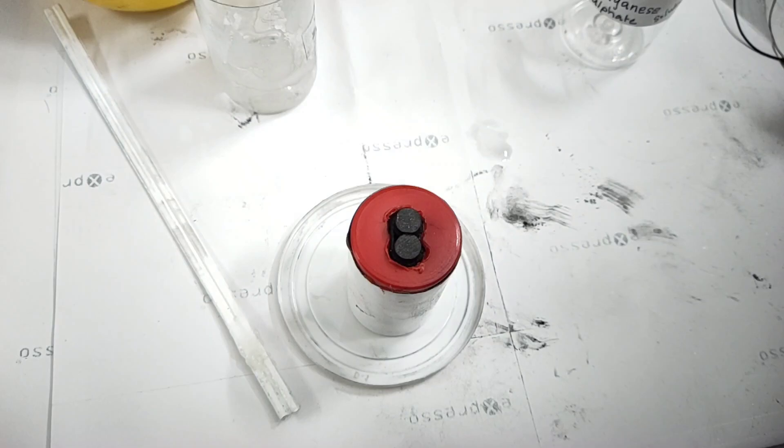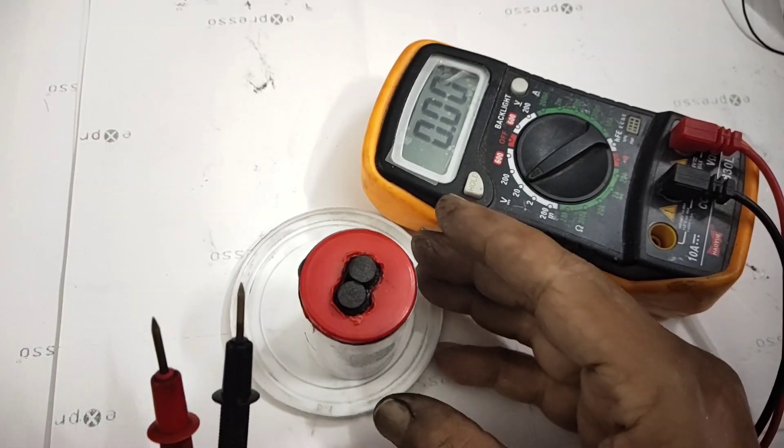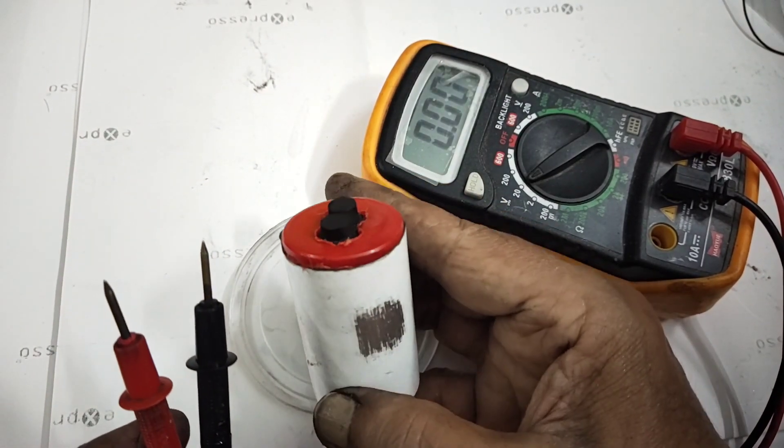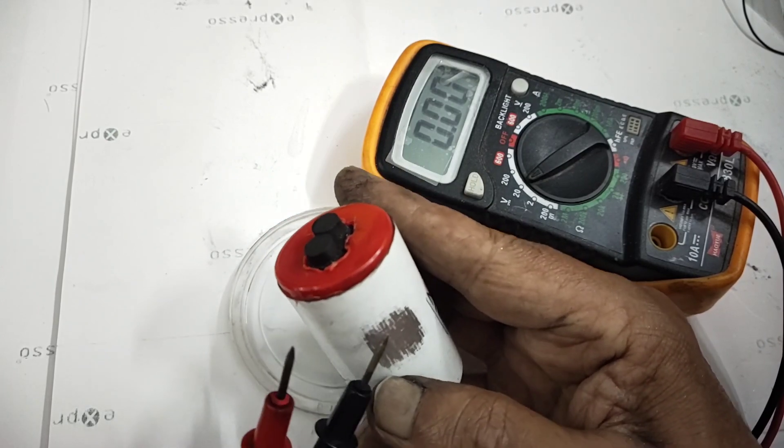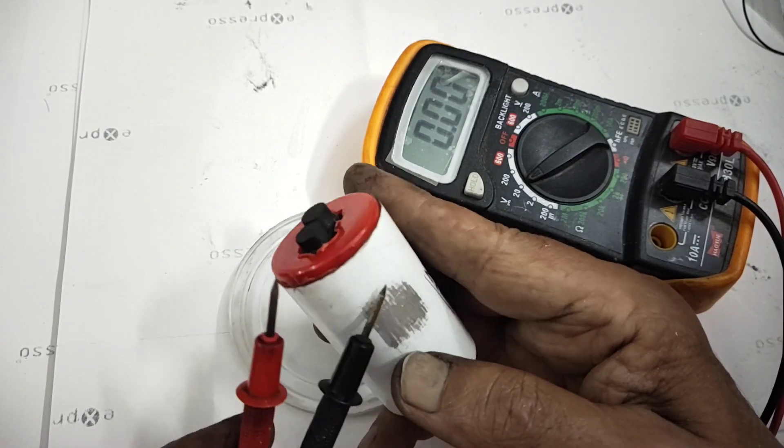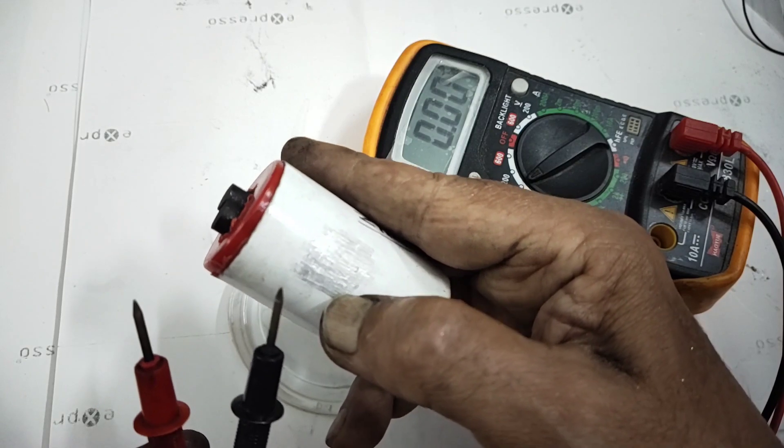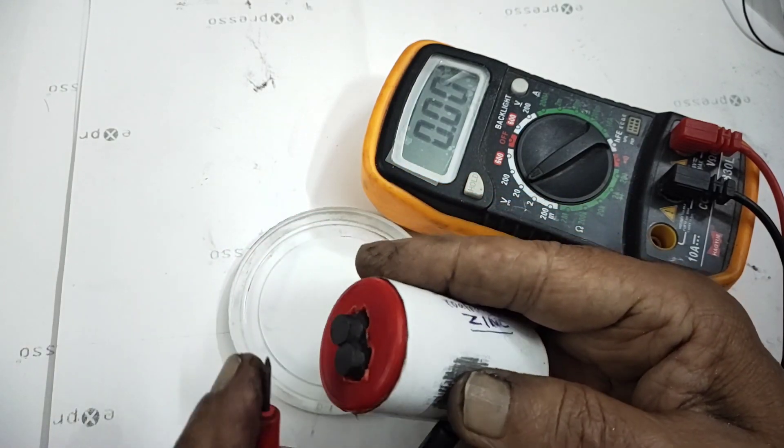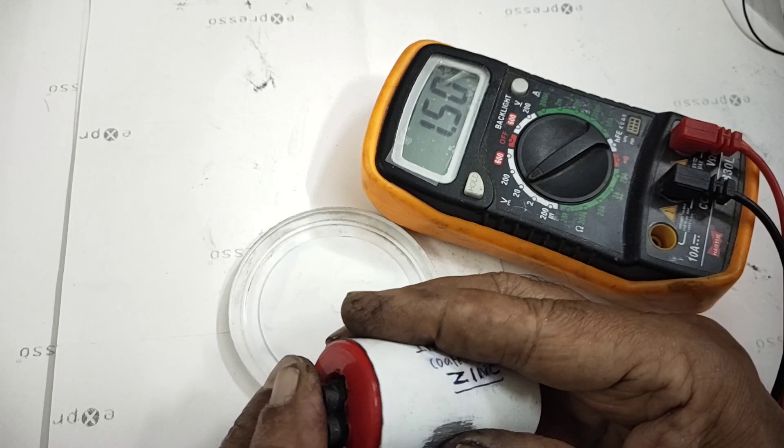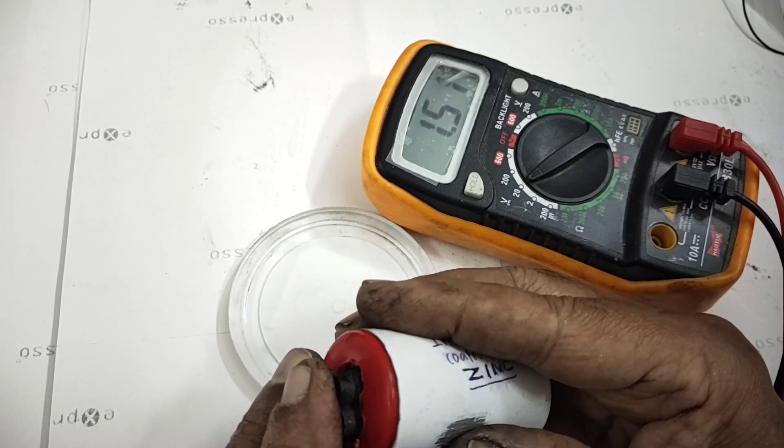Now we shall see the volt what is generating now. Still it is very, once you get saturated still better volt will get. This will be the negative, I have scratched the aluminum can outside, so I place this and we will see what is the voltage. At present it is generating 1.5.